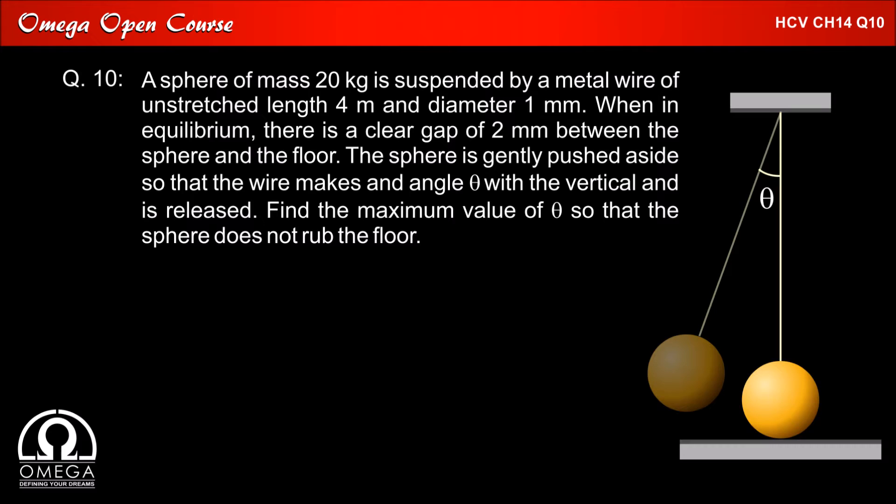When in equilibrium there is a clear gap of 2 mm between the sphere and the floor. The sphere is gently pushed aside so that the wire makes an angle theta with the vertical and is released. Find the maximum value of theta so that the sphere does not rub the floor.